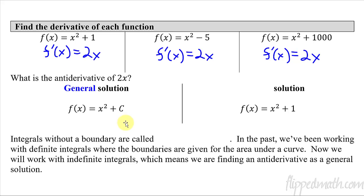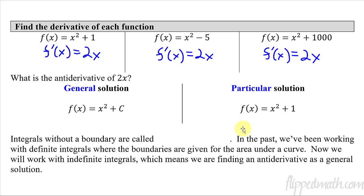The plus c represents any possible constant we could have, since the derivative of a constant is 0. That's a general solution. Now if I have a specific number instead of c — in this case x squared plus 1 — that's called a particular solution. It's the particular solution that fits given criteria, which I will show you examples of as we work through this lesson.